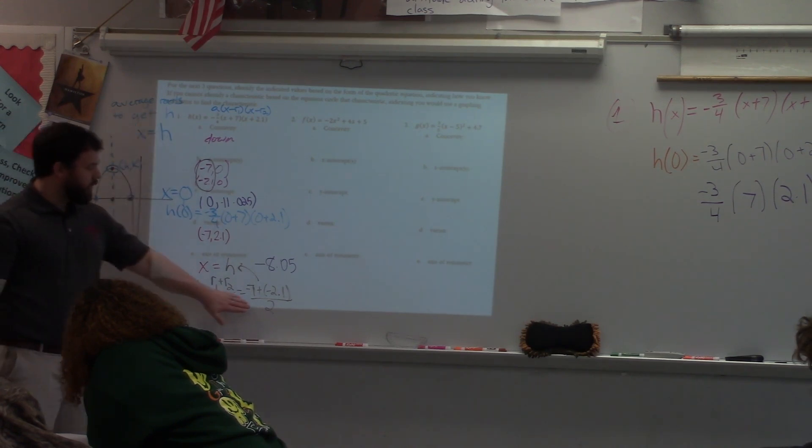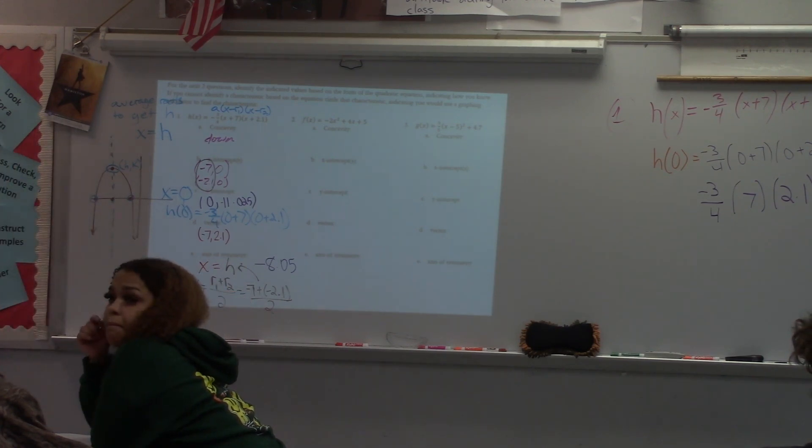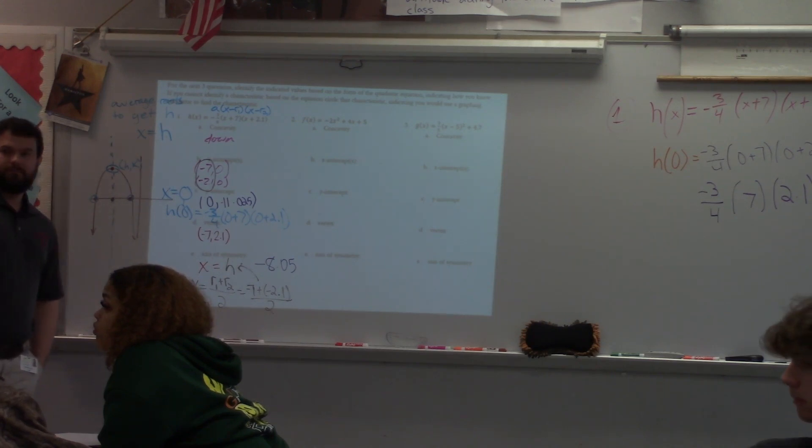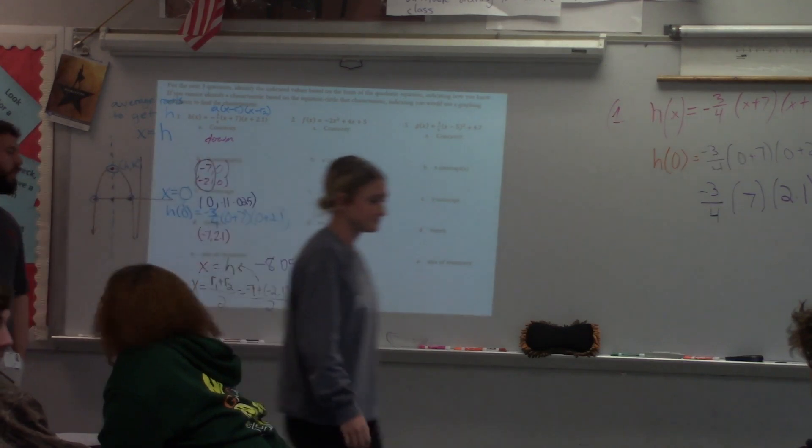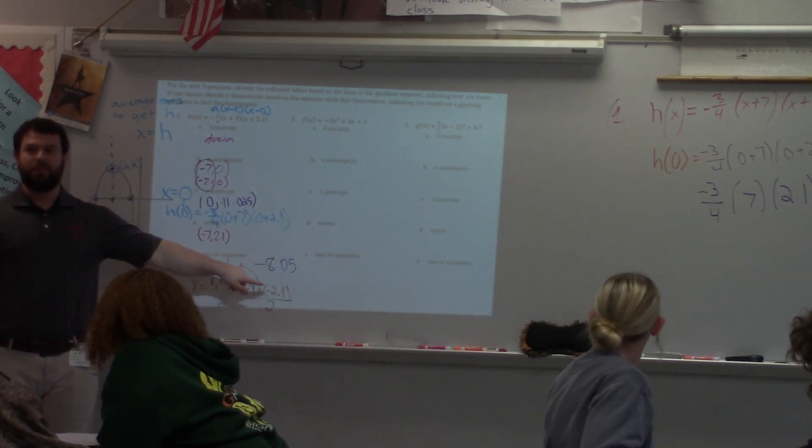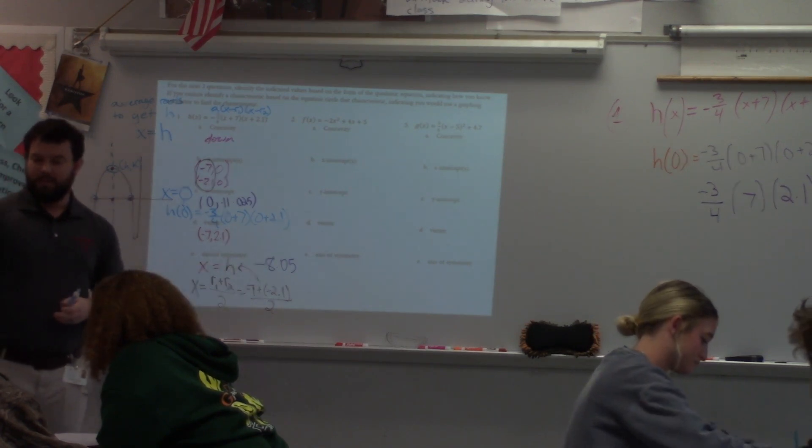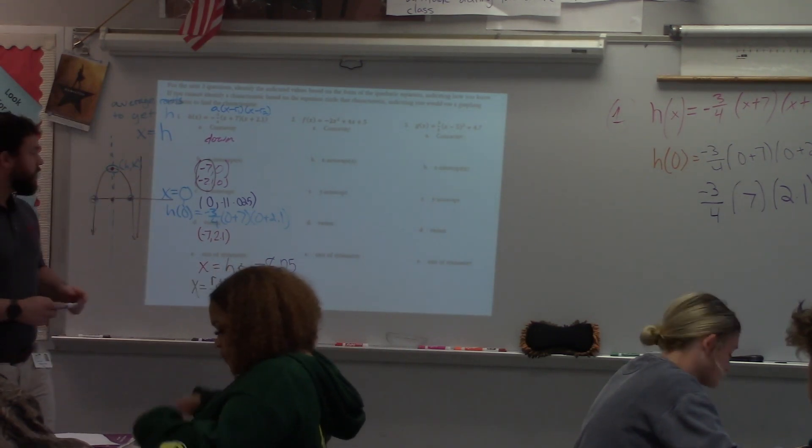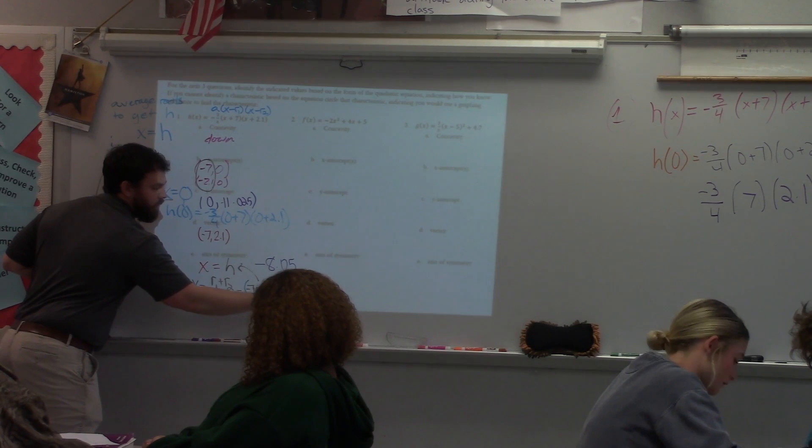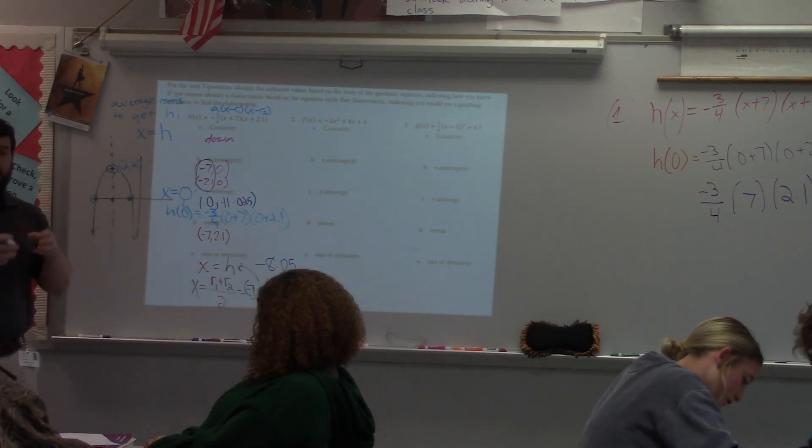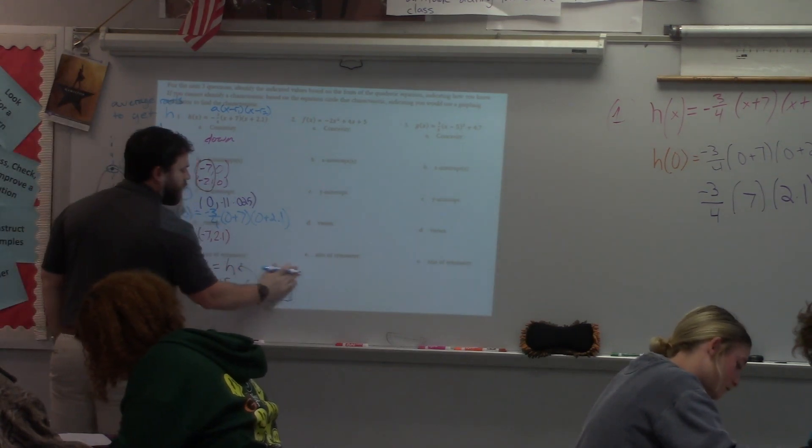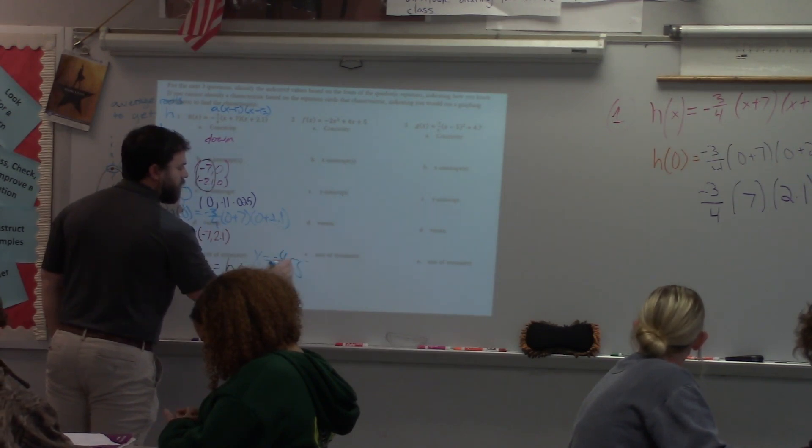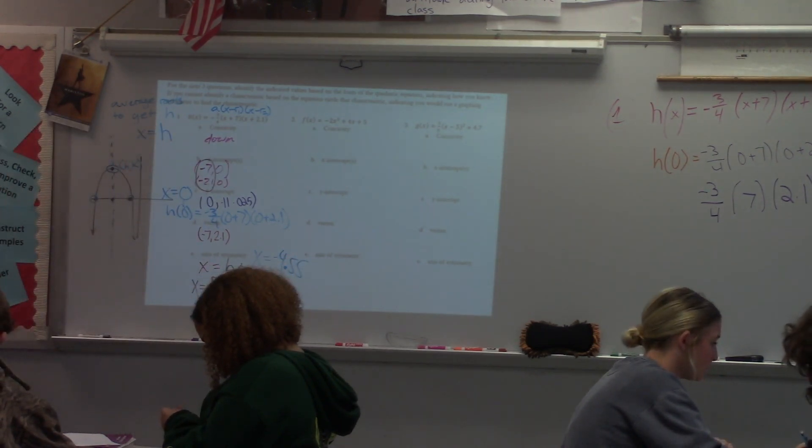The line of symmetry always goes through the vertex, and that vertex has the point h comma k. x equals h is always my line of symmetry, but in factored form, I don't have h. To get h, I have to average my roots. So be careful when you substitute this in. What did this group run into when they got this negative 8.05? Be careful, is that negative 7 being added to the negative 2.1 first. What do I need to do when I put this into the calculator to make sure they get added first? Parentheses. Put those parentheses in there to make sure they add first, then divide by 2. So what h value should we have gotten? x equals negative 4.55. That's the line of symmetry we should have gotten.